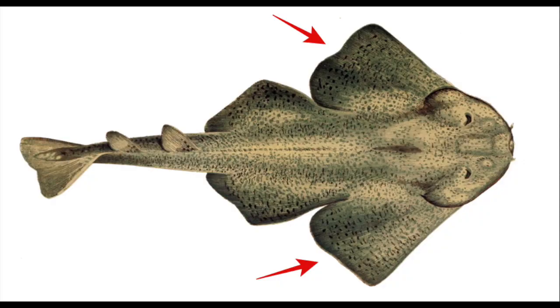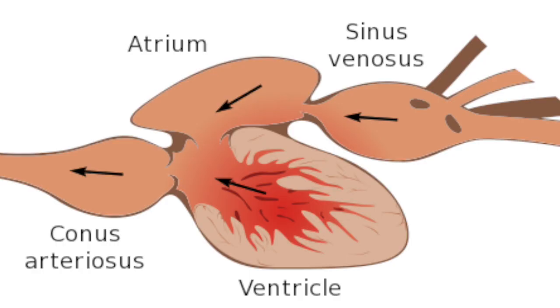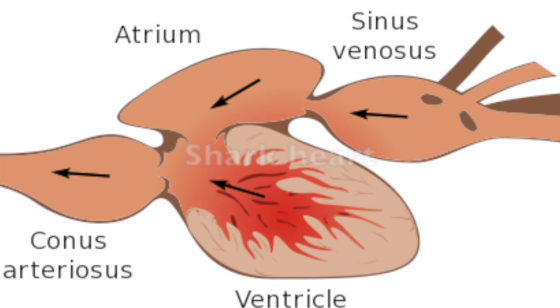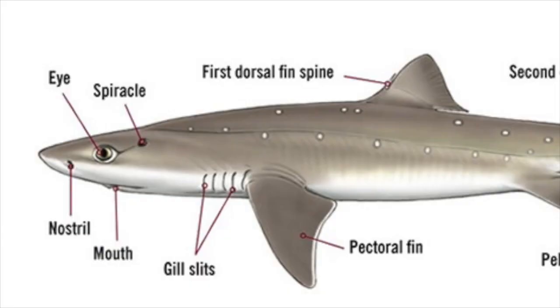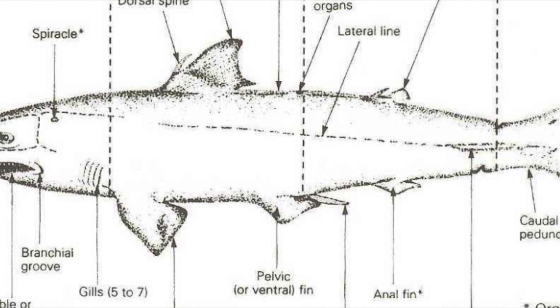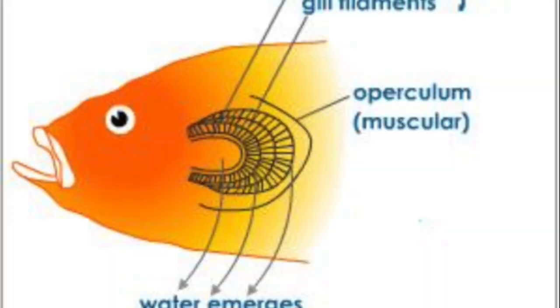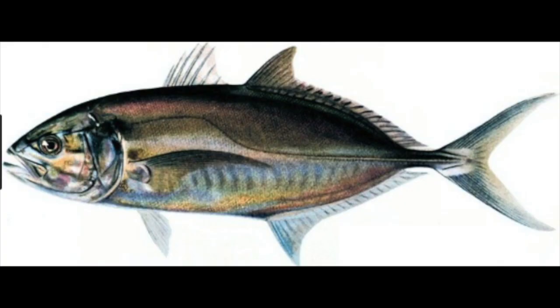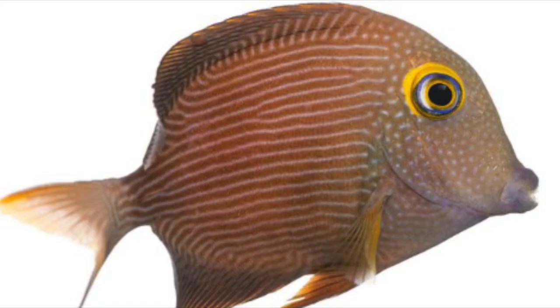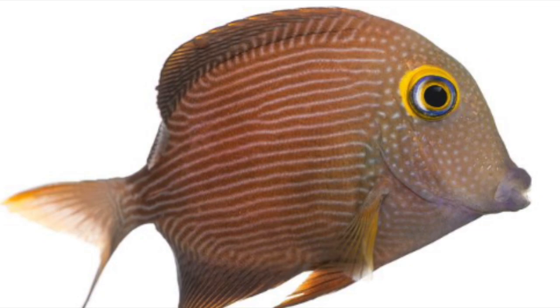Class Chondrichthyes are jawed vertebrates with paired fins, paired nares, and scales. They also have a heart with its chambers in series. They're known to have an asymmetrical caudal fin and unprotected gill slits of five or more pairs. The class Osteichthyes includes fishes that have skeletons made up of bone tissue instead of cartilage. They have five pairs of gill slits protected by an operculum, meaning gill covers. The class Osteichthyes is an extremely diverse group of 28,000 different species.